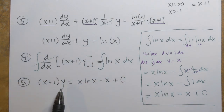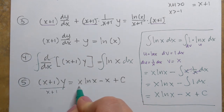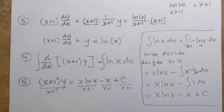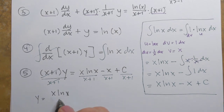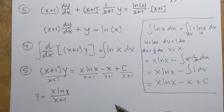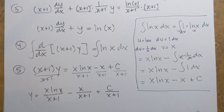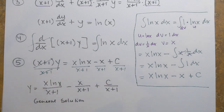So the result is (x plus 1)y equals x·ln(x) minus x plus C. That is the general solution to the given differential equation. Before applying the initial condition, I'll write it in explicit form by dividing every term by (x plus 1): y equals x·ln(x) over (x plus 1), minus x over (x plus 1), plus C over (x plus 1). That represents a family of functions where C can take any value.